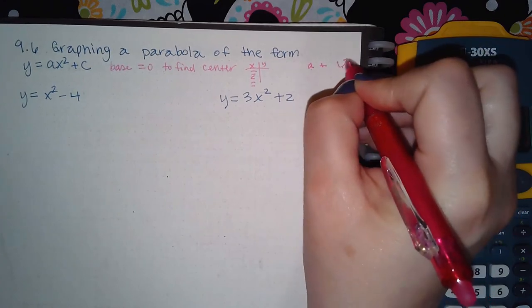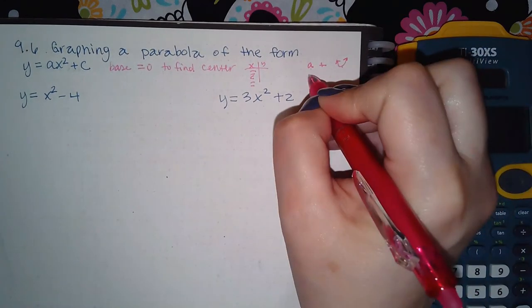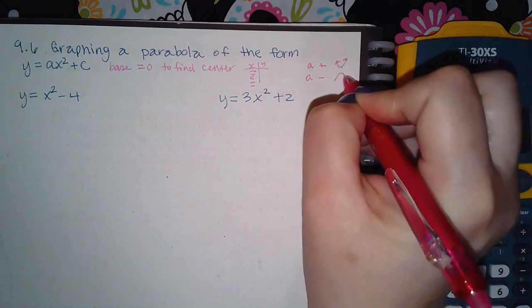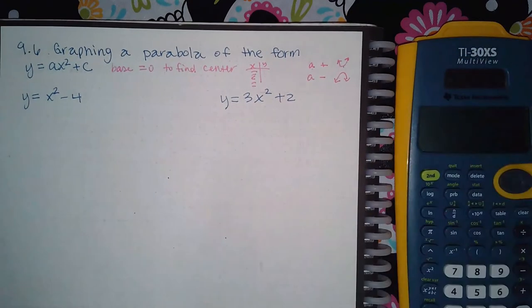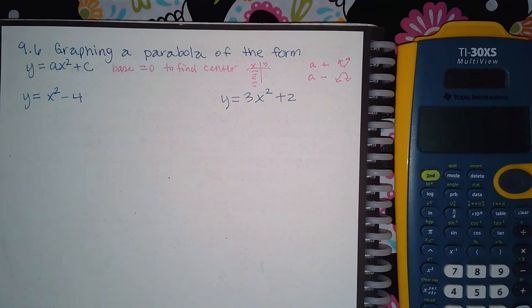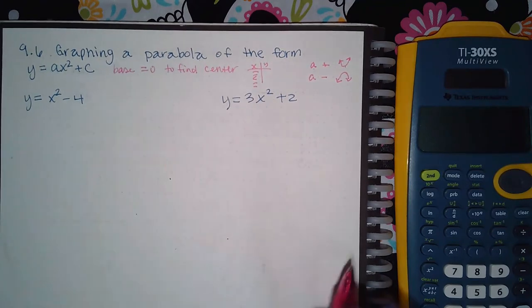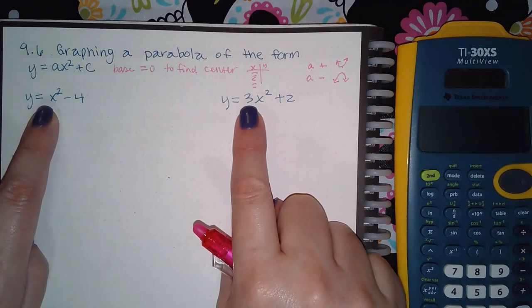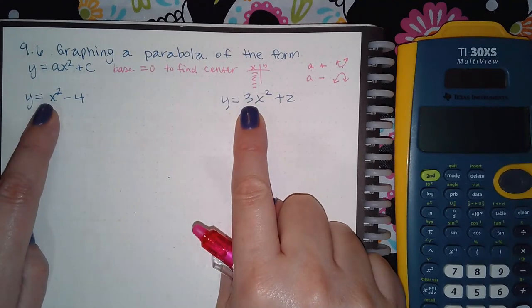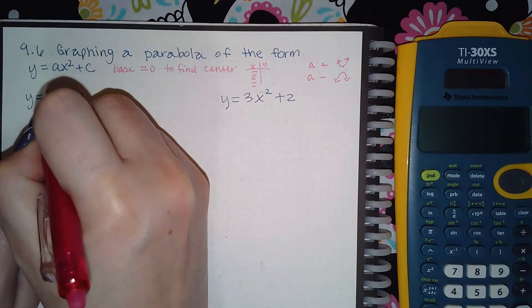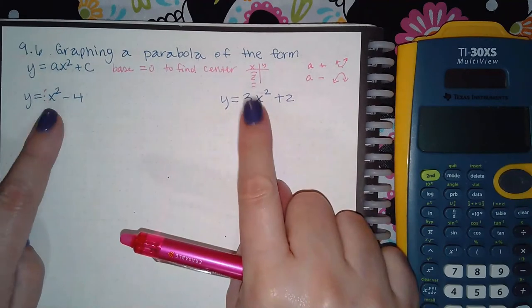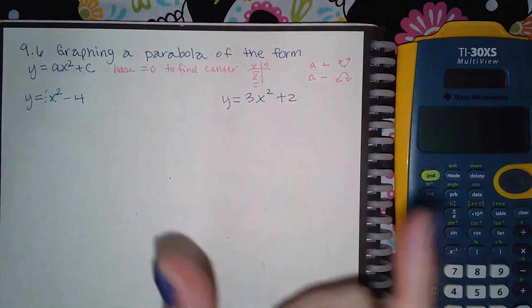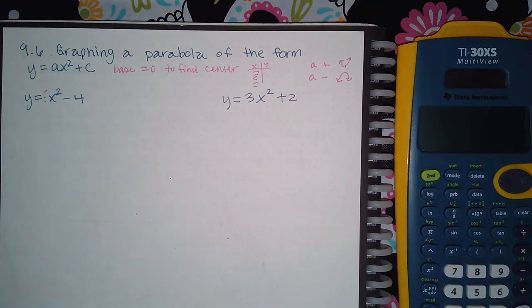And if the a is negative, it'll go downward like a hill. So we need to know that for both of these. If you notice the coefficients in the front here, it's a positive 3 and here it's a positive invisible 1. So we do know that our both of these graphs are going to look like a u shape.